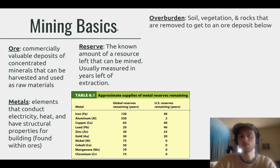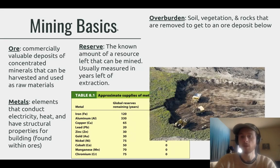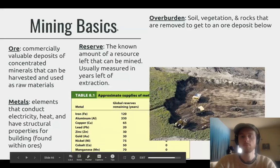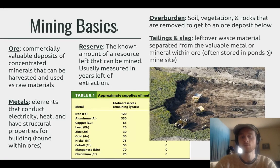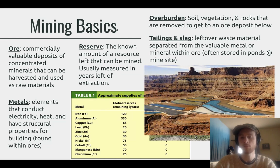Overburden is the soil, vegetation, and rocks that are removed to get at an ore deposit near the surface — they're dug out of the way and piled around the area. We can see big dump trucks carrying away rocks, vegetation, and soil, making piles of it nearby. Tailings are non-valuable rock components separated out from the metal being mined. Slag is a liquid mixture of waste products — often chemicals used to separate the valuable parts of the ore — stored in pools right on the mining site.